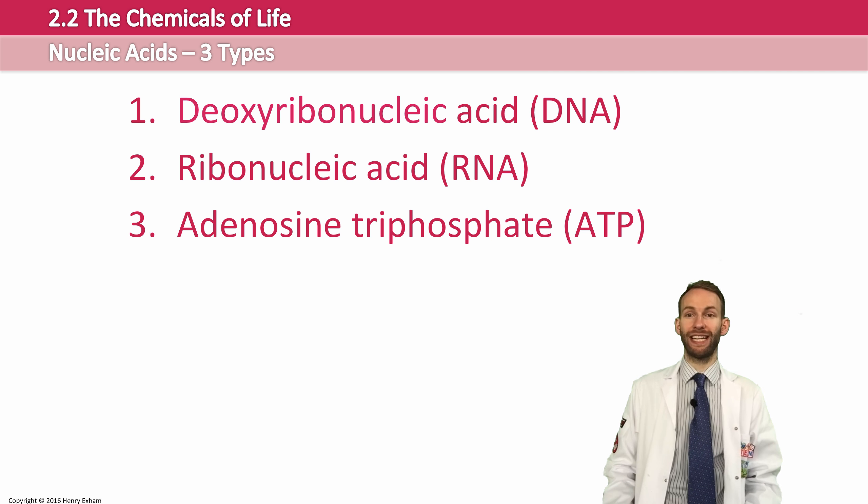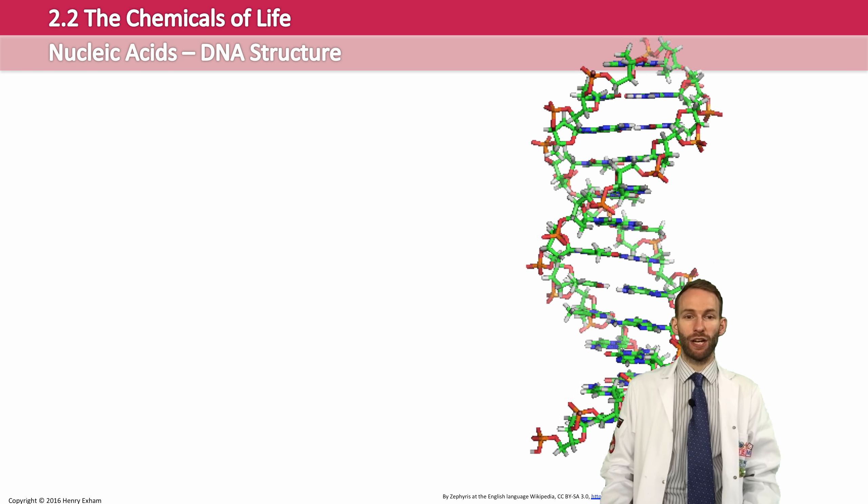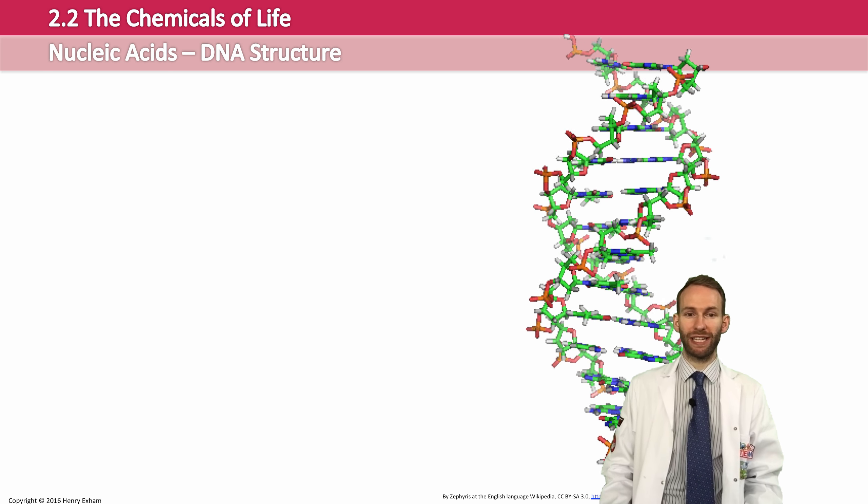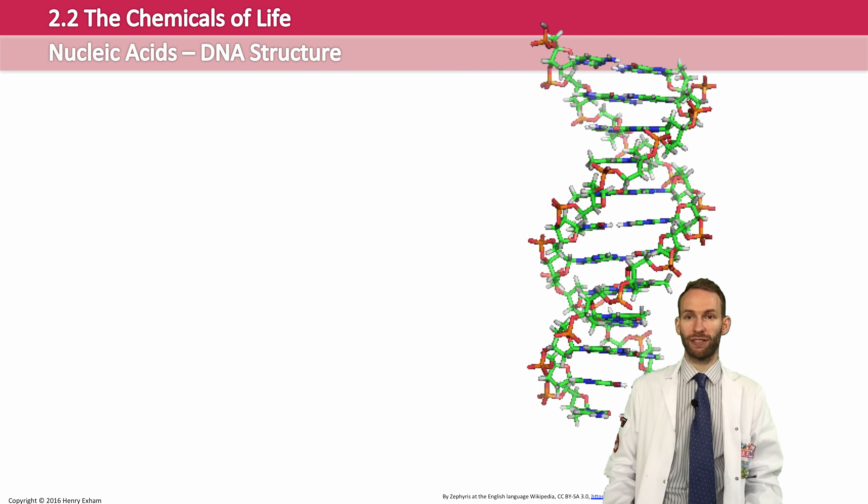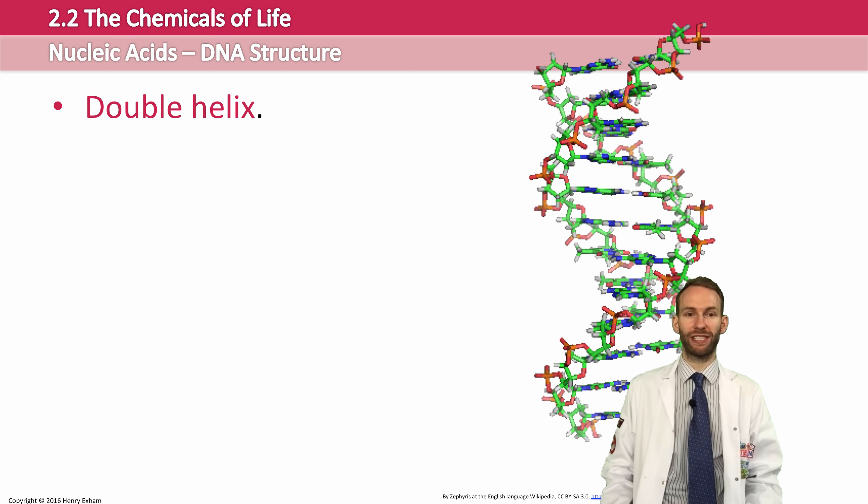We'll look at DNA first, as it's probably the one you've heard about most. So, DNA structure may look very complicated, but actually it's quite simple if you break it down into its component parts. It has this special shape, this double helix as it's called, which is basically a ladder that's been twisted up.